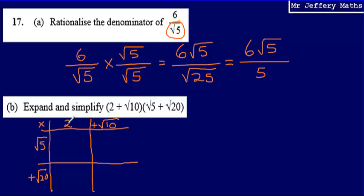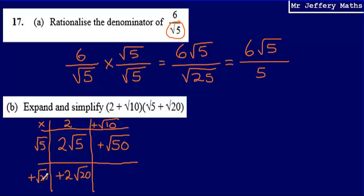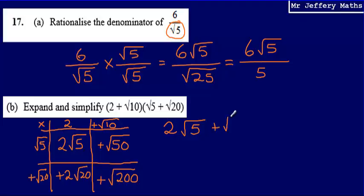Multiplying these together: 2 times root 5 gives me 2 root 5. Root 5 multiplied by root 10 gives me root 50. 2 multiplied by root 20 gives me 2 root 20. And root 10 multiplied by root 20 gives me root 200. Writing this out in a line: 2 root 5 plus root 50 plus 2 root 20 plus the square root of 200.